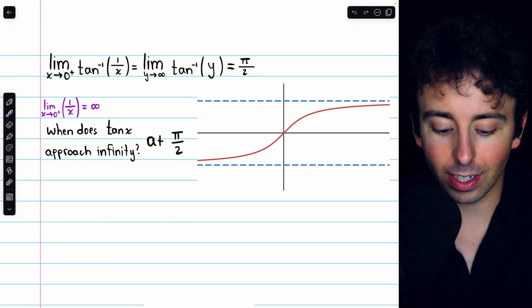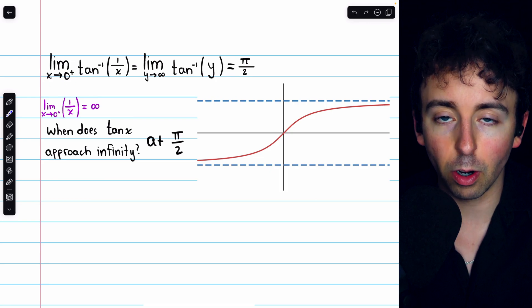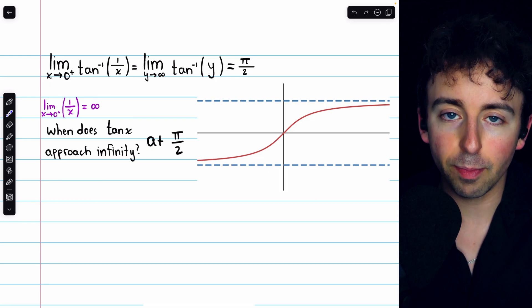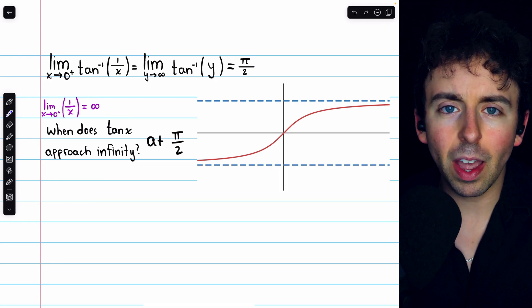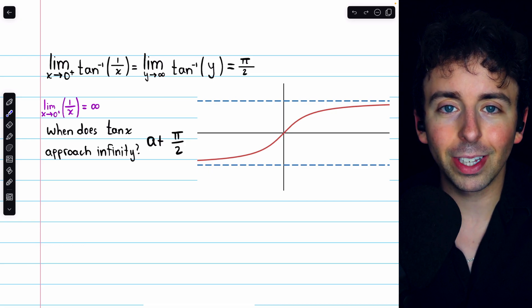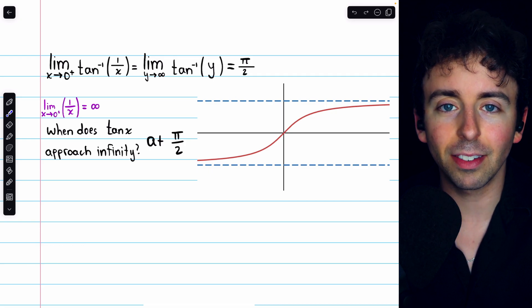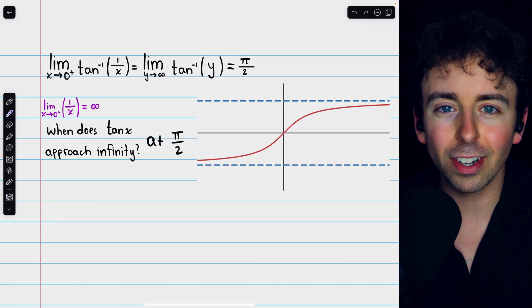Anyways, the limit of arctan of 1 over x as x approaches 0 from the right is positive π over 2. Let me know in the comments if you have any questions, and be sure to check out my Calculus 1 course and Calculus 1 exercises playlists in the description for more. Thanks for watching.